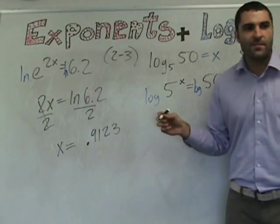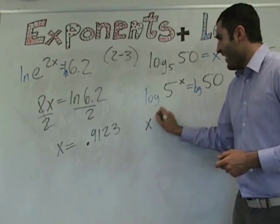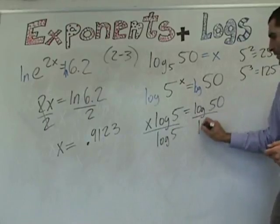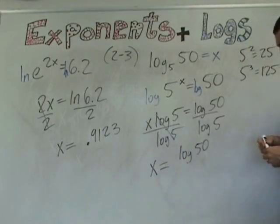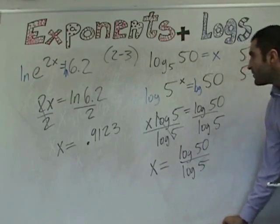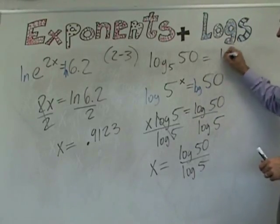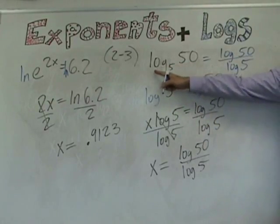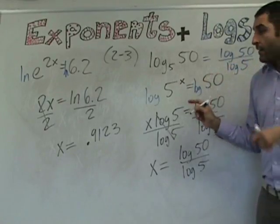Log both sides: x log five equals log 50. The change of base formula says you take the log of the number divided by the log of the base. So the answer is log 50 divided by log 5. And log of 50 divided by log of 5 is not log of 10 — that's a common mistake people make.